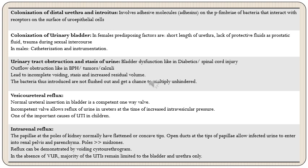After colonizing the distal urethra, the organisms need to ascend higher into the urinary tract. The second step is colonization of the urinary tract. In females the predisposing factors are the short length of urethra, lack of protective fluids like prostatic secretions, and trauma during sexual intercourse — all these predispose females towards development of UTI.